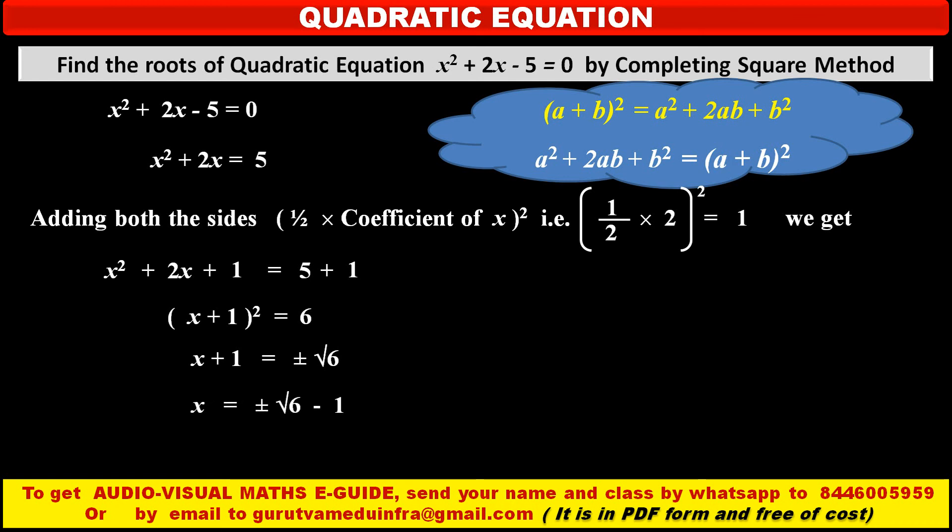Therefore, x = ±√6 - 1. So either x = √6 - 1 and x = -√6 - 1. So, these are two roots for this given quadratic equation: √6 - 1 and -√6 - 1.